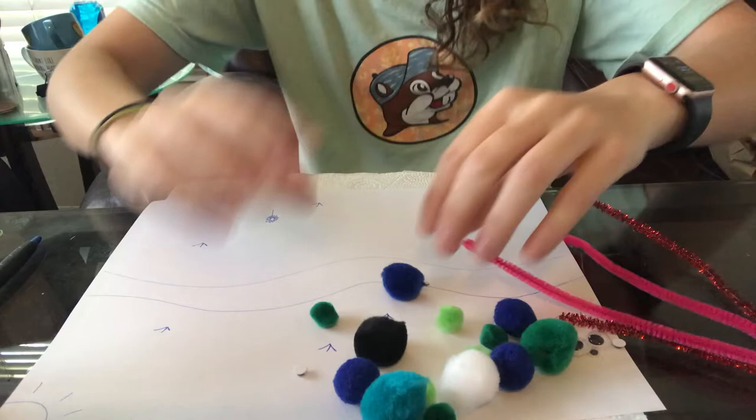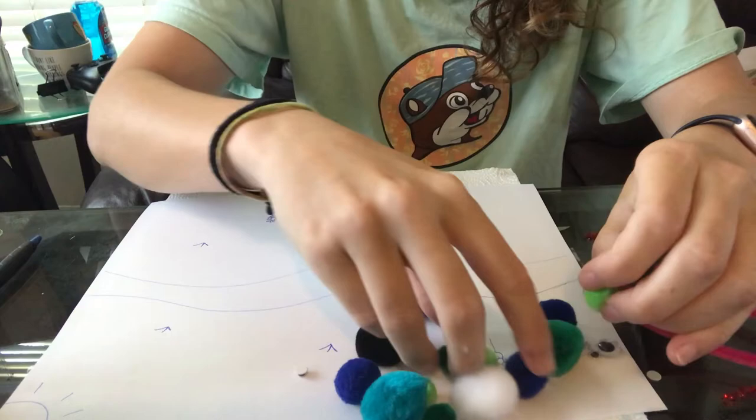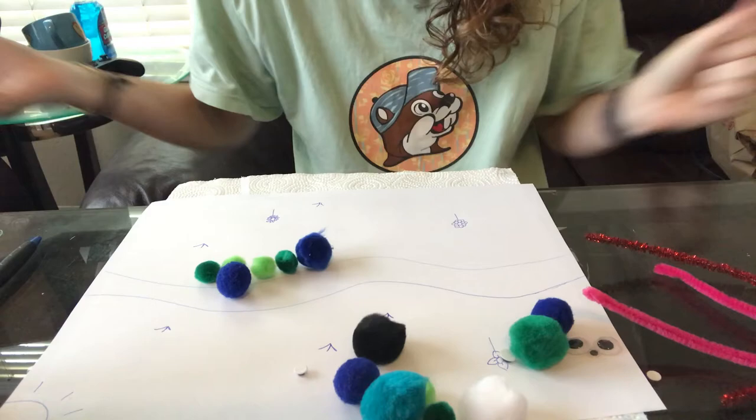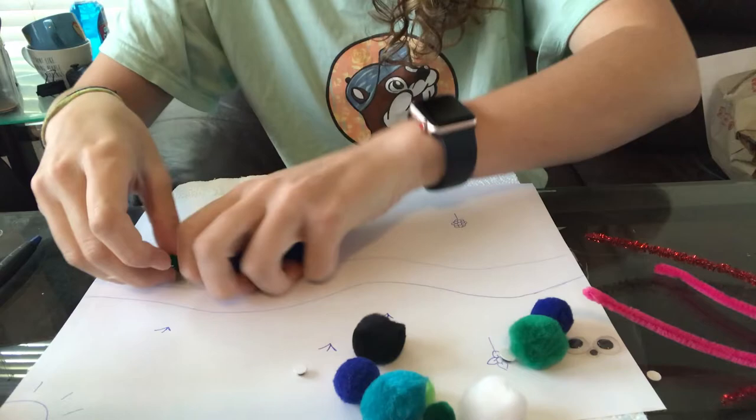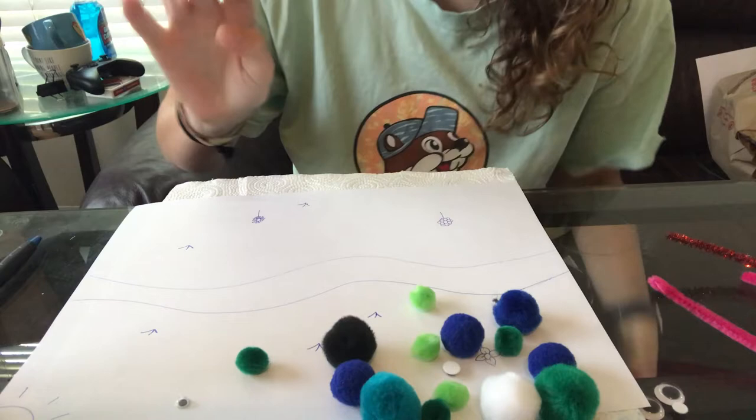To start, I'm going to make just a classic Carl, so I'm going to grab these colors. Now normally Carl has eight little segments, but for today I'm just going to do six because that's just what I'm feeling like doing today. To actually make our Carl, I'm going to show you two different methods of making Carl on this sheet of paper.